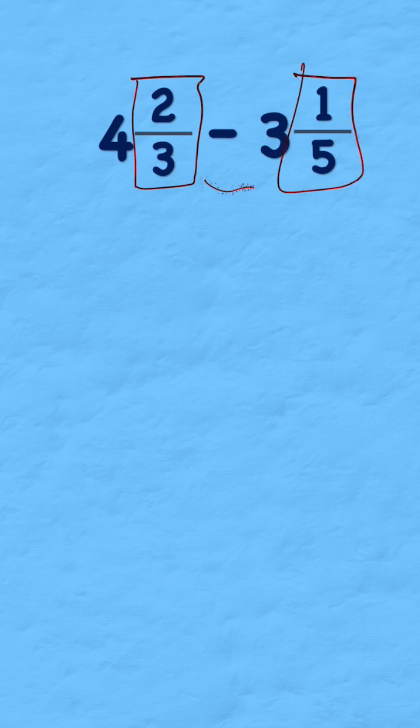How do I do that? Well, I can multiply them by each other to get a new common denominator of 15. So I would rewrite it as 4 and something fifteenths subtract 3 and something fifteenths.